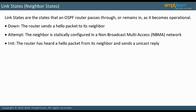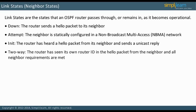In the INIT state, a router has heard a hello packet from its neighbor and sends a unicast reply. The interface remains in this state if hello time does not match. The two-way state occurs when a router has seen its own router ID in the hello packet from the neighbor and all neighbor requirements are met. The neighbor is added to the neighbor table and bidirectional communication is established between the routers.